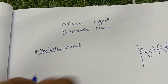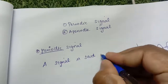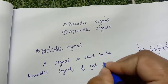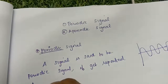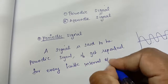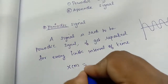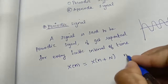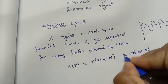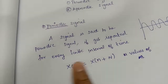First we can see the definition. A signal is said to be periodic when it gets repeated for every finite interval of time. One more thing: we can say this mathematically — if x(n) is equal to x(n + N), where n is the index values and N is the period, and if this condition satisfies the equation, we can call it a periodic signal.